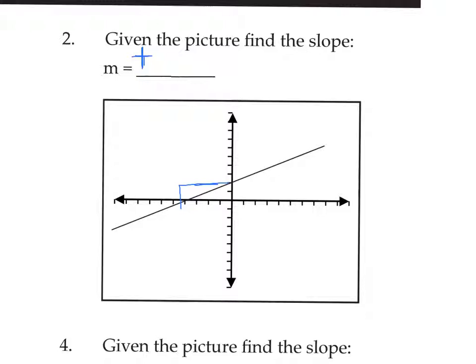The rise is vertical — this rise is two high, so the rise is two. The run is horizontal, and the length of this run is four. So this is a slope of two over four. We always simplify our fractions, so two over four simplifies to one half.